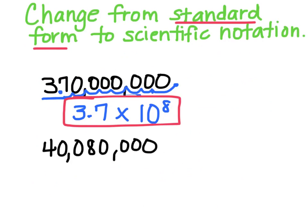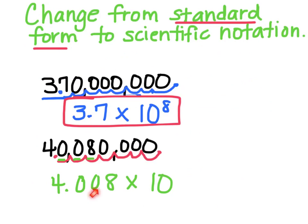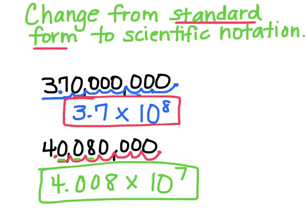Let's try the second one. My decimal is at the end. I need to start moving it backwards until I get to a number between 1 and 10. Finally I'm at a number — it's 4. So I write 4 point 0, 0, 8 — until there are only zeros left. I don't have to write those. So I write 4.008 times 10 to the... I have to figure out how I'd get back to this original number. I'd move it over one, two, three, four, five, six, seven — times 10 to the 7th. I moved it 7 spots, and if I move 7 spots to the right I get back to that number. So I just wrote those in scientific notation.